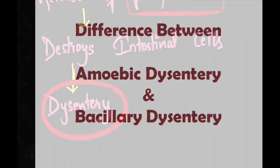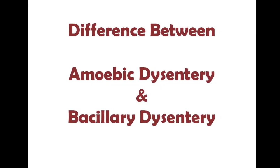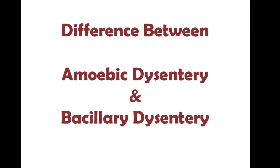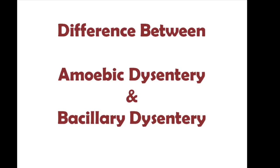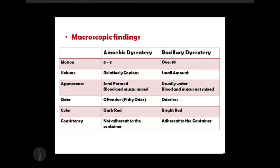Now heading towards the differences between amoebic dysentery and bacillary dysentery, there are several macroscopic as well as microscopic findings. The first and most obvious difference is that amoebic dysentery is caused by a parasite — Entamoeba histolytica — whereas bacillary dysentery is caused by bacteria — Shigella species.